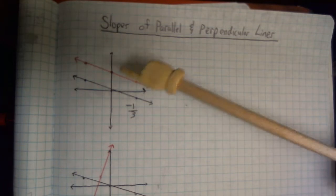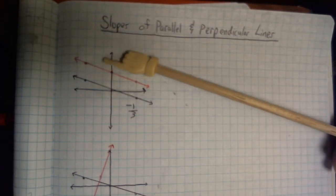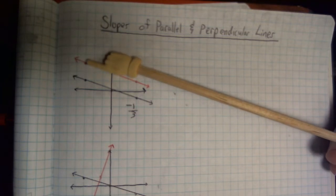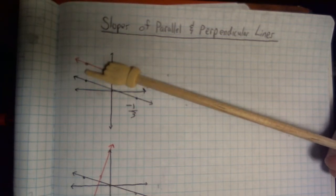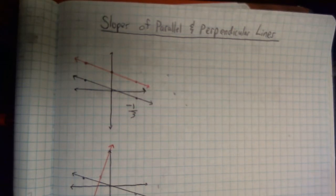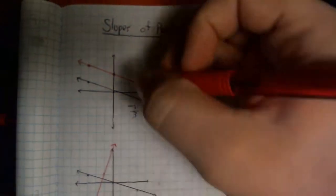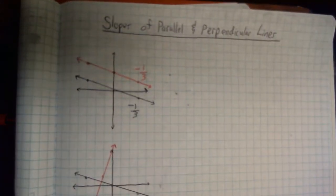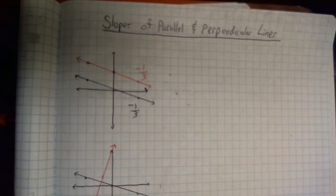Let's look at the line that we want to be parallel to it. Here are some points that work. If I drop down, I'm only dropping down one and I'm going to end up going over three. So the slope for my parallel line is also negative one over three. That's good because we want them to be changing at the same rate, meaning they will never intersect. They have to have the same slope.